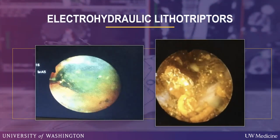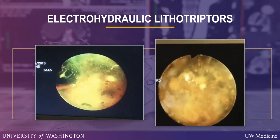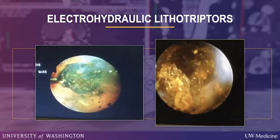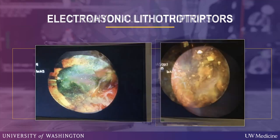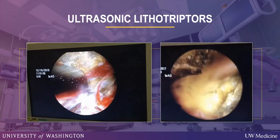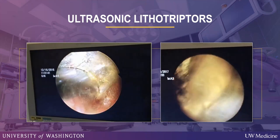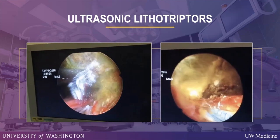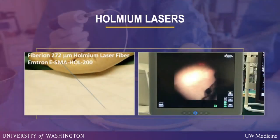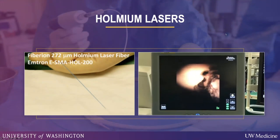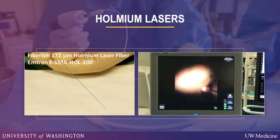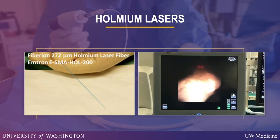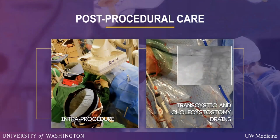We also use a variety of lithotriptors — stone-breaking devices that fragment stones into smaller pieces, which can then be removed with balloons, baskets, or graspers. There is also an ultrasound-based coring lithotriptor that cores into gallstones, biliary stones, or kidney stones and breaks them into pieces for subsequent removal. Finally, the Holmium laser is a foreign body and stone-breaking device that focuses on the stone or foreign body, fragments it, and allows subsequent removal with baskets, graspers, or balloons.